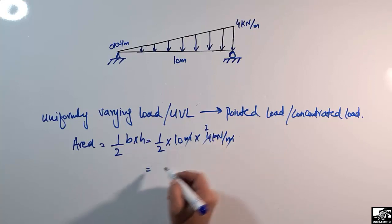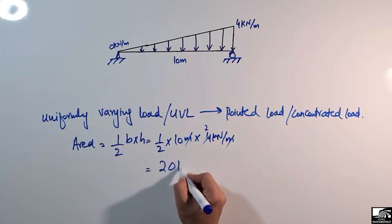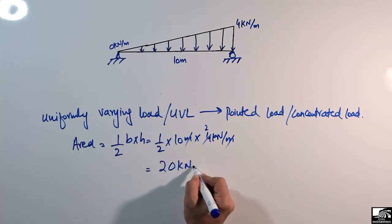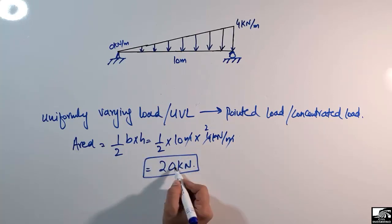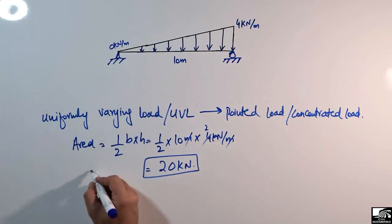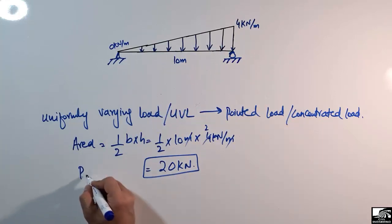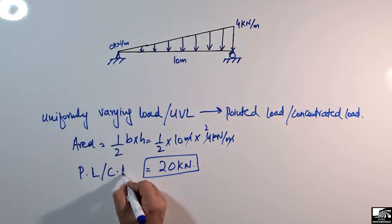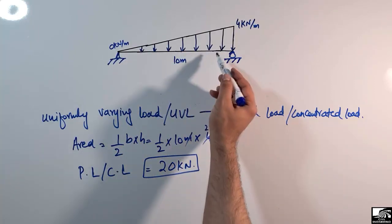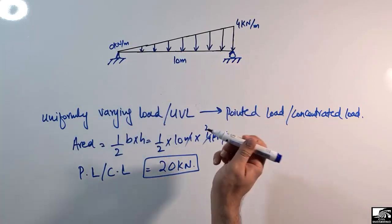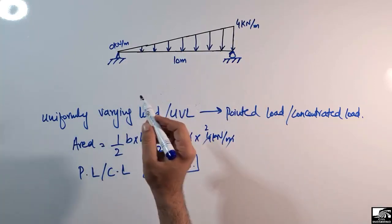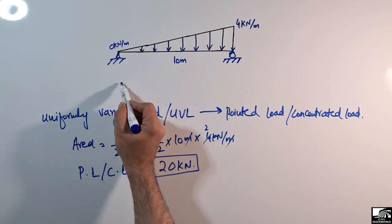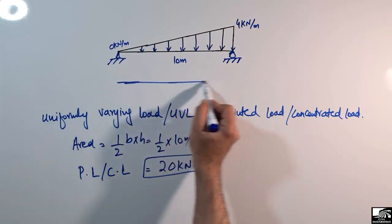Multiplying these values, the meters cancel out, leaving us with kN. The result is 20 kN. So the area of the triangle gives us 20 kN, which is the equivalent pointed or concentrated load acting on the beam.